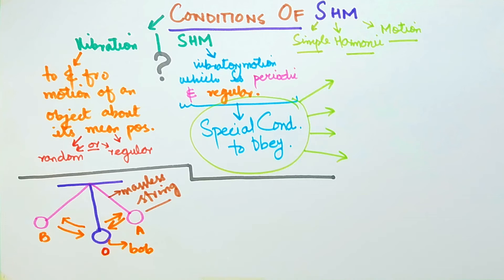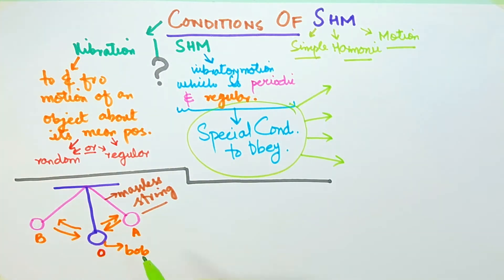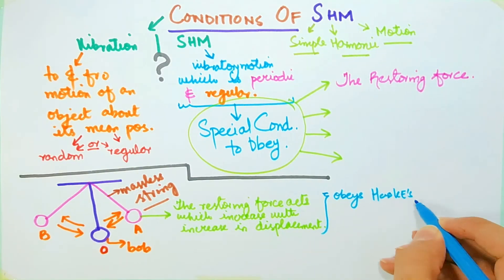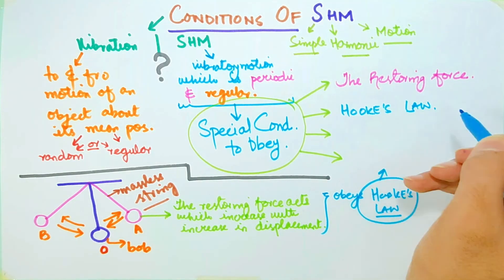When the mass reaches A, the restoring force on the bob increases with the increase in displacement, thus obeying Hooke's law. Therefore, first condition for the body to execute SHM is elastic restoring force, and the second one is the law of elasticity or Hooke's law.